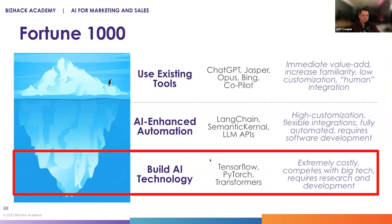There is also a no man's land here: you should never try to build AI technology unless you're sitting on $200 million with a team of 30-plus data scientists and machine learning researchers. You do not want to be competing with Google, Microsoft, OpenAI, Amazon, NVIDIA, et cetera, to actually build your own language model.